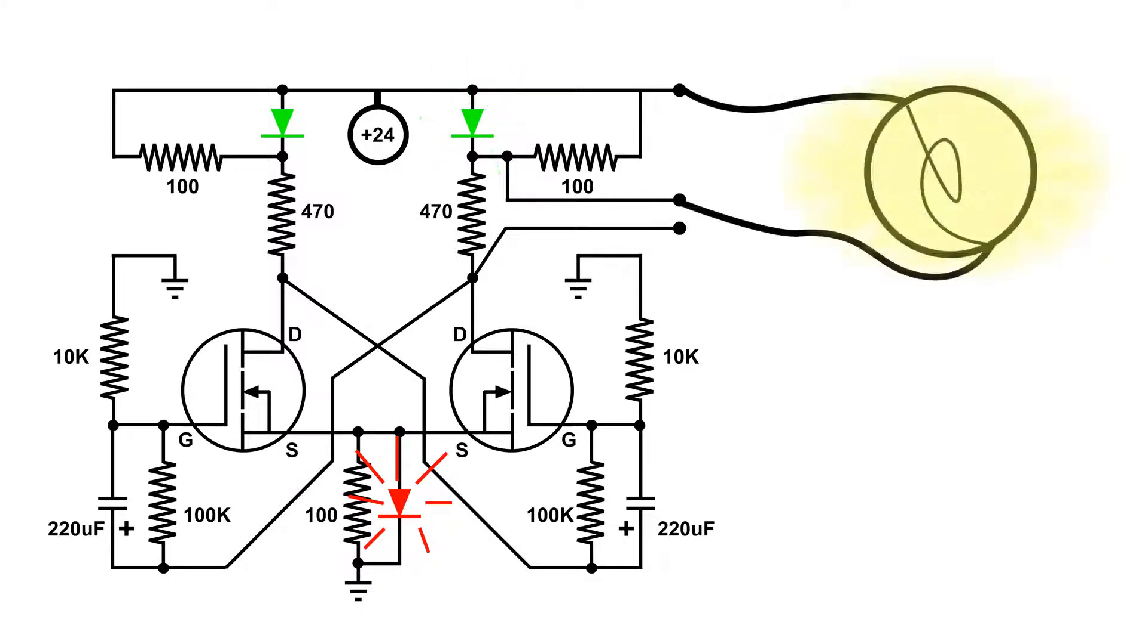Then I'm going to put an incandescent bulb, a number 49 bulb, across the LED to see what happens. Then I'm going to change it so it also shorts out the 470 ohm resistor.